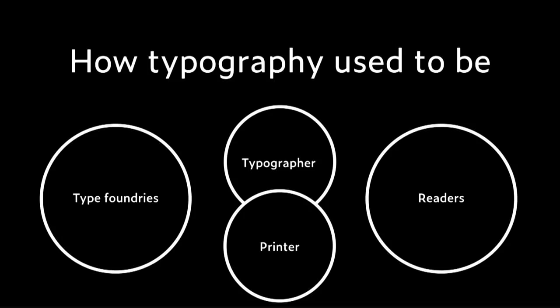This is how typography used to be in the olden days. We had type foundries on the left — they made fonts out of lead. We had typographers who understood how to use this, and printers who made final products for readers. Typographer and printer sometimes were the same person; they always were in the early days, then they separated.